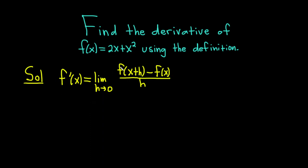So f of x is 2x plus x squared. So f of x plus h basically means we need to evaluate f of x at x plus h. So we replace each copy of x with x plus h. This is equal to the limit as h approaches 0.